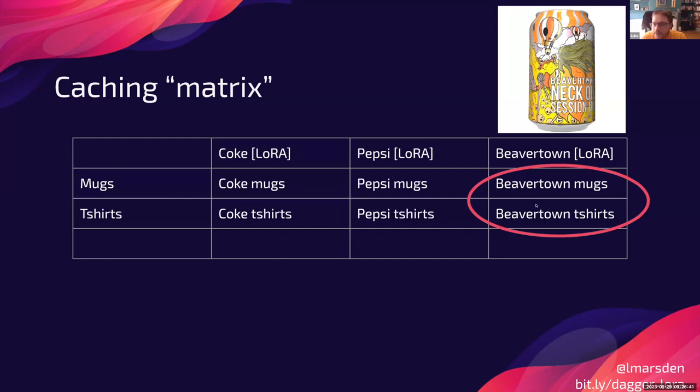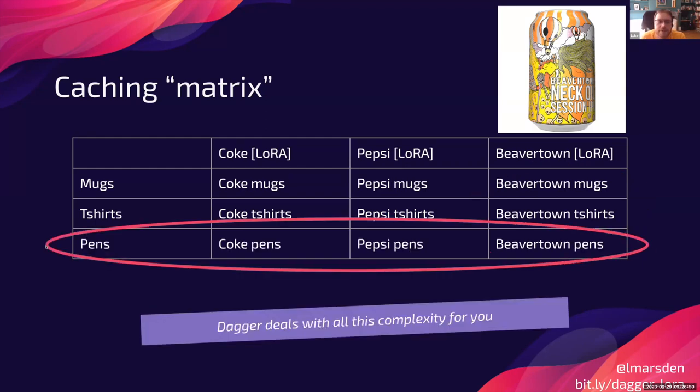If you then add the brand for Beaver Town, then Dagger will automatically detect that it needs to build a new LoRa, which are these little files. I'll show you the files in a second, which contain just the difference between the initial model weights and the model weights when the model has been fine-tuned. So it will create these new LoRa files for the Beaver Town, and then it will go and generate Beaver Town mugs and Beaver Town shirts by doing inference for each of the kind of cross product of the brands and the prompts.